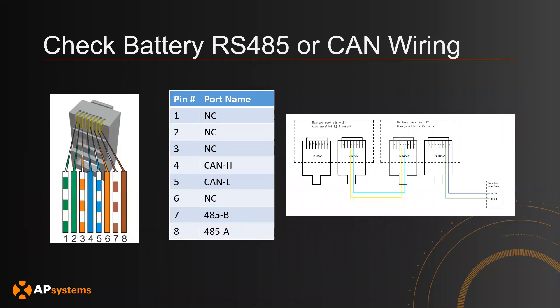Another common issue is if the battery communication cable was not set up correctly. The image on the left shows the colors and pins of the RJ45 connector — make sure those pins are connected correctly. On the PCS, pins 4 and 5 are for CAN, and pins 7 and 8 are for RS-485. Consult the battery manual to confirm correct pin usage. For the AP Battery, pins 7 and 8 carry the RS-485 connection and must go to pins 7 and 8 on the PCS. For parallelizing batteries, also connect pins 4 and 5 between both batteries.